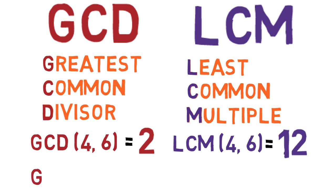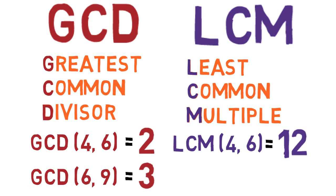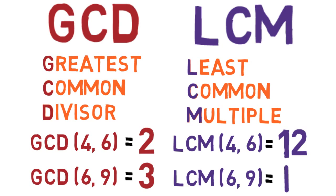As another example, the GCD of 6 and 9 is 3, because 3 is the greatest number that's a factor of both 6 and 9. And the LCM of 6 and 9 is 18, because 18 is the smallest number that's a multiple of both numbers.